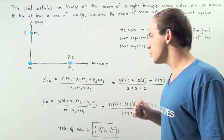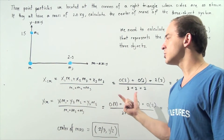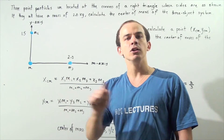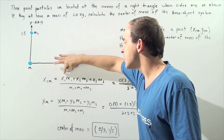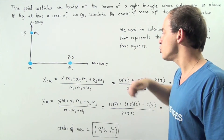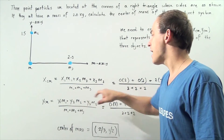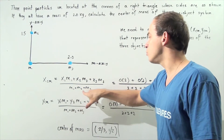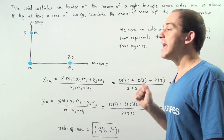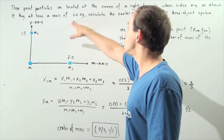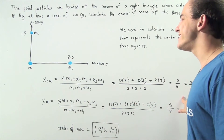We use the following two formulas. Note that these formulas are identical to the formulas when the objects lie along the same axis. For the X coordinate: X1 times M1 plus X2 times M2 plus X3 times M3, divided by M1 plus M2 plus M3. Note that all objects have the same mass — a mass of two kilograms.